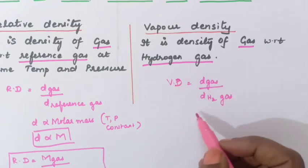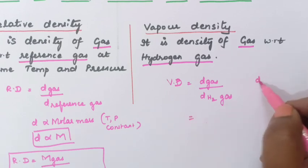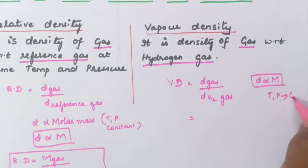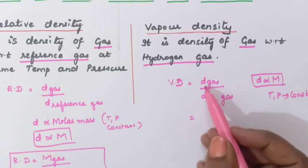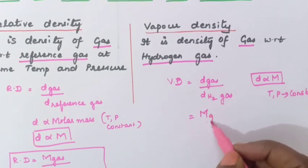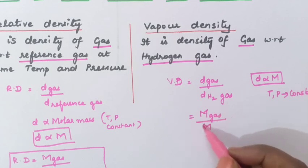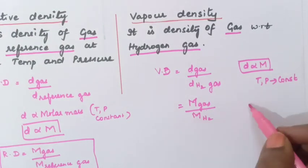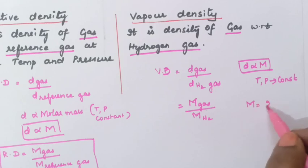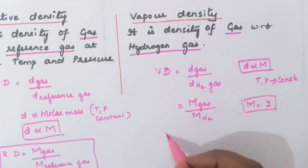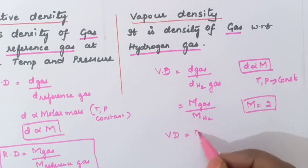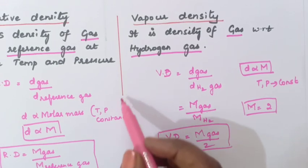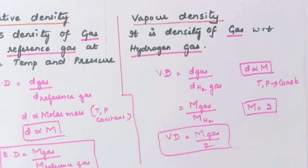Vapor density VD — again, density is directly proportional to molar mass provided temperature and pressure are constant. So in place of D, I can substitute M. Vapor density equals molar mass of gas divided by molar mass of hydrogen gas. The molar mass of hydrogen gas is 2. So the formula becomes: vapor density equals molar mass of gas divided by 2. We will use this equation to solve problems now.